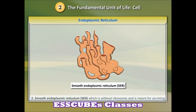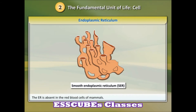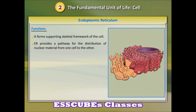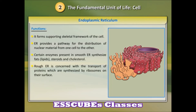SER is meant for secreting lipids. The ER is absent in the red blood cells of mammals. Functions: one, it forms the supporting skeletal framework of the cell. Two, ER provides a pathway for the distribution of nuclear material from one cell to the other. Three, certain enzymes present in smooth ER synthesize fats, lipids, steroids, and cholesterol.